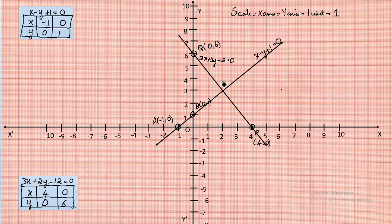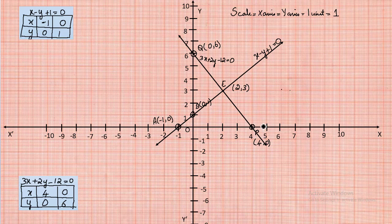The intersection of these two lines is at point E, where x = 2 and y = 3, giving coordinates (2, 3). The question asks for the vertices of the triangle formed on the x-axis. Observing the graph, the triangle formed on the x-axis is triangle EAP. Its vertices are: E at (2, 3), A at (−1, 0), and P at (4, 0).